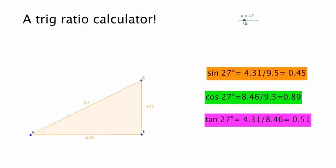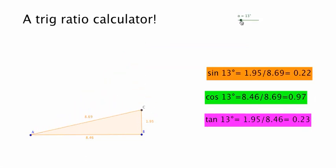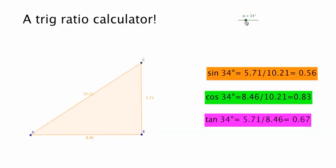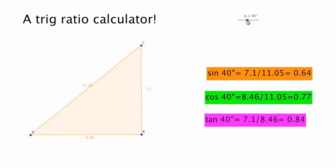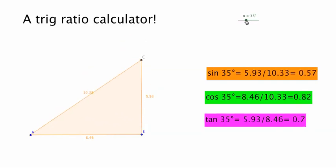So what you can see is as I change the angle, the trig ratios change accordingly. Currently that says sine 35 is 0.57 and it gives us a value for cos 35 and tan 35, and those values change as I change the angle.